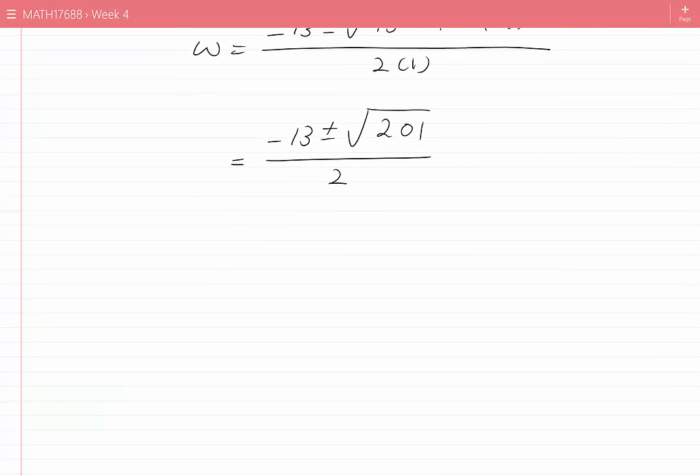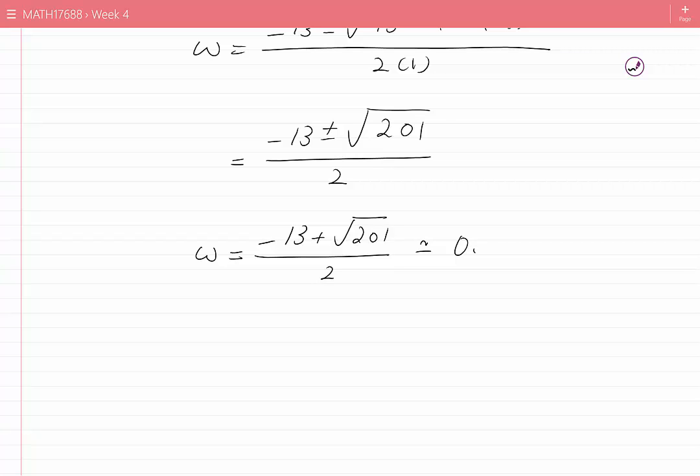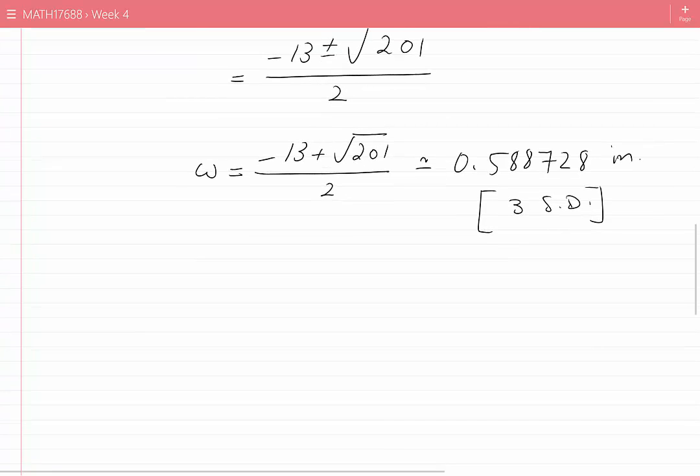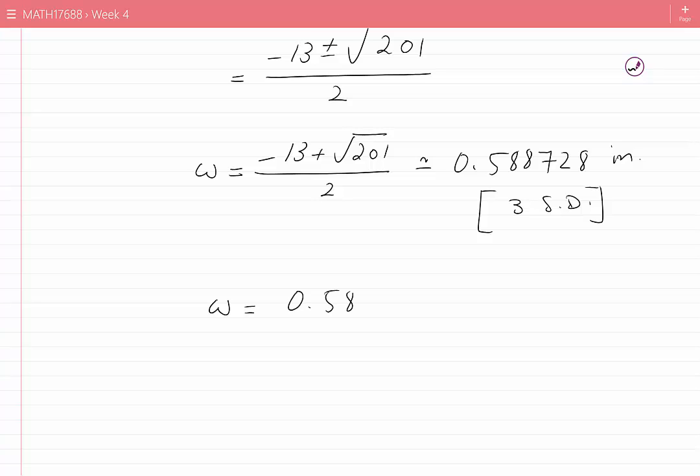One of the roots is negative and we discard that root. The other root would be negative 13 plus the square root of 201, divided by 2, which is approximately equal to 0.588728 inches. We should keep at least three significant digits, so we can round this to 0.589 inches.